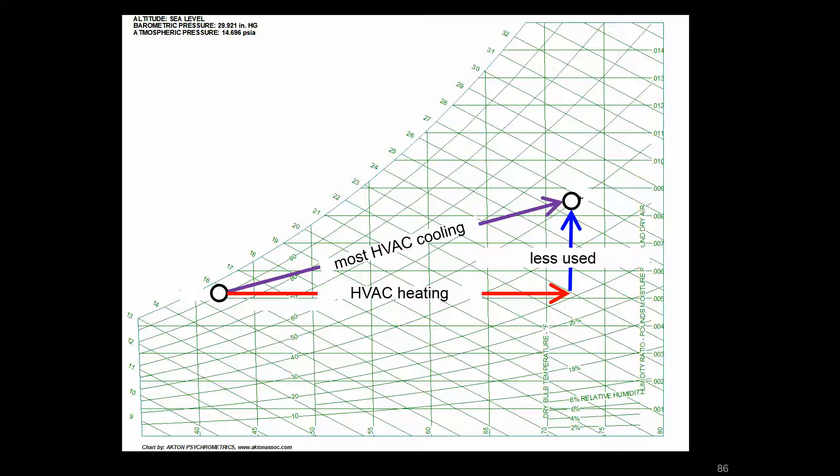It probably suffices to say that for any cooling that has dehumidification and sensible cooling, we're going to look at the total and care about taking the enthalpy as the delta to plug into this calculation. And then for the sensible, for any heating process or any cooling that is just sensible, meaning it's not wringing any water out of the air, we're going to look at that sensible component.